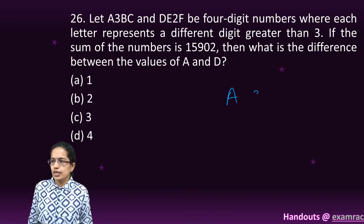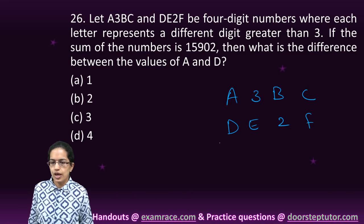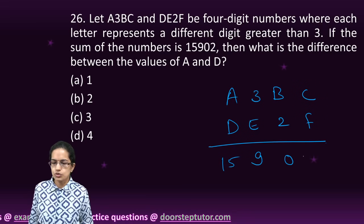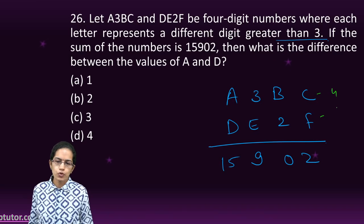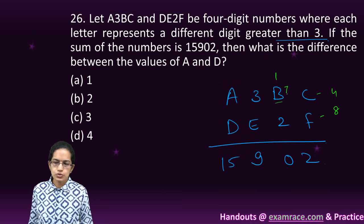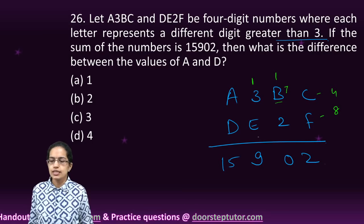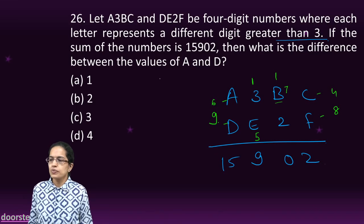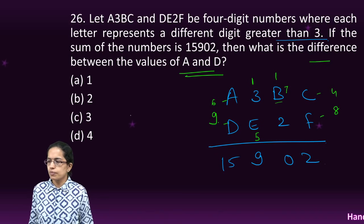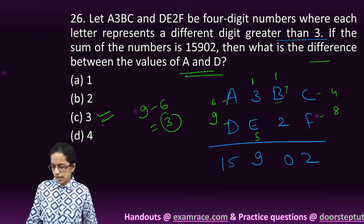The next is you have A3BC, DE2F and the sum of these letters gives me 15902. Now all the letters must be greater than 3. So let's assume C and F to be 4 and 8. So 4 and 8 gives you 12, 1 carry over. Now B should be equal to 7, so this would give me 0. So another carry over. This would make 4. So E would be 5. So A and D would be 6 and 9. So the difference between A and D would be 9 minus 6 which is 3.